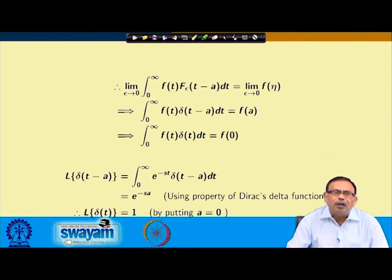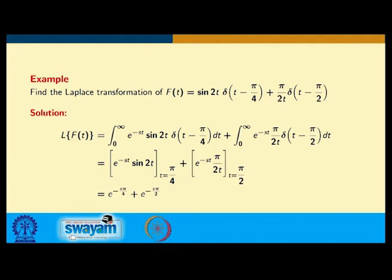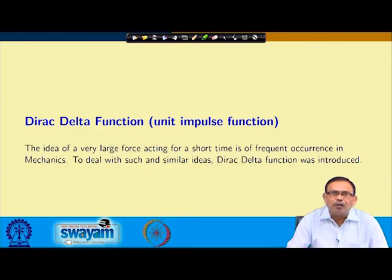Using the formula L{δ(t−a)} = e^(−sa), I write the integral as ∫₀^∞ e^(−st)·sin(2t)·δ(t−π/4) dt evaluated at t = π/4, plus the second term, giving the final result. The Dirac delta function models a large force acting for a very short time, and is frequently used in mechanics.